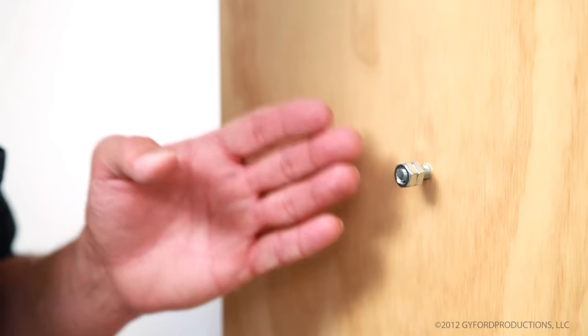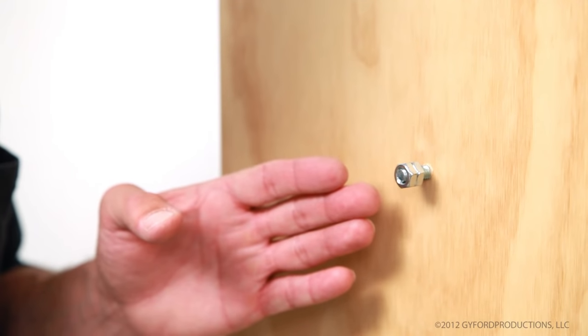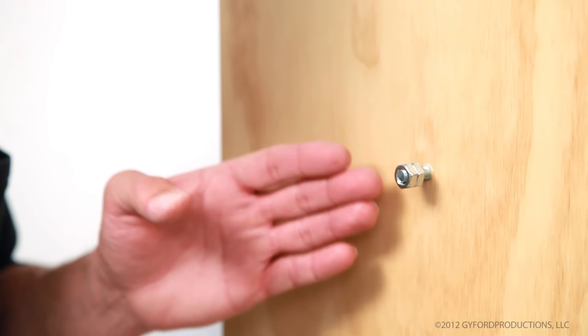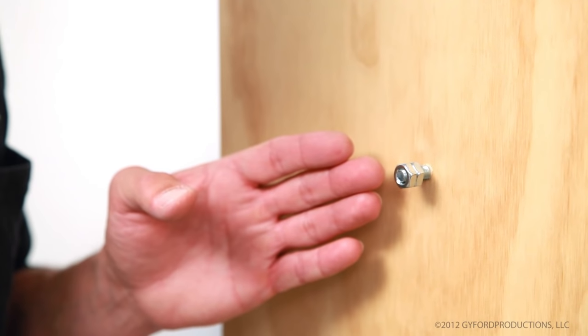This is also the only way you can remove a wood hanger screw without destroying the screw. Vice grips will remove them, but they're not going to be usable afterwards.